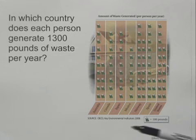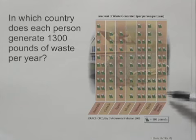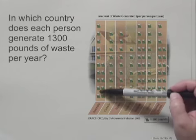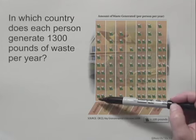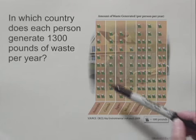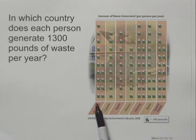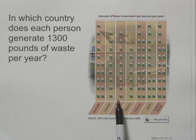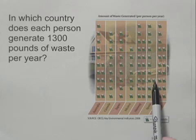Now if we count up, we see these are all evenly spaced and there are 10 in this row. So we're looking for a country that has a column of 10 and then 3 more. When we look across, we see that Spain has 10, 11, 12, 13 symbols.